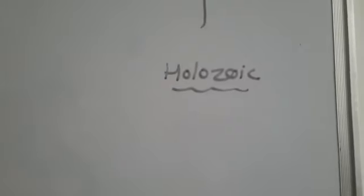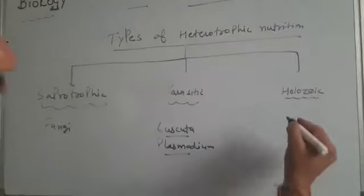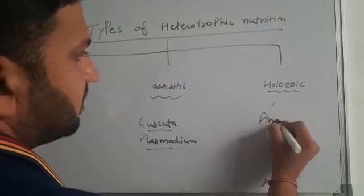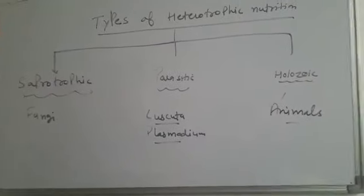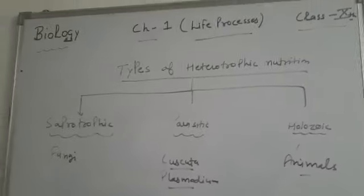The third is holozoic mode of nutrition. In holozoic mode of nutrition, the organism takes complex organic food material into their body by the process of ingestion, and the ingested food is digested and then absorbed into the body cells. Examples are all animals, including human beings.